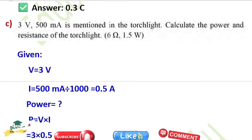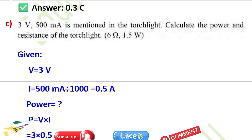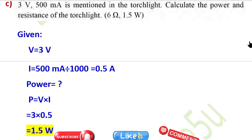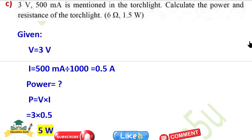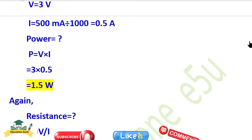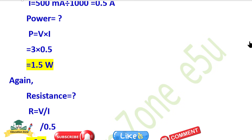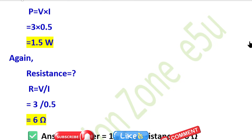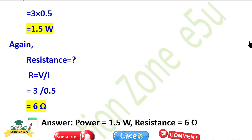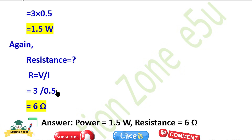Question C: 3 volt and 500 milliampere is mentioned on a torch light — calculate the power and resistance. Given: V = 3 volt, I = 500 milliampere = 0.5 ampere. Power = V × I = 3 × 0.5 = 1.5 watt. Resistance R = V / I = 3 / 0.5 = 6 ohm.